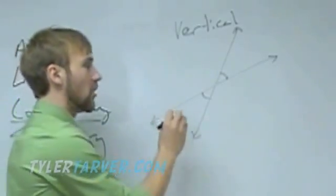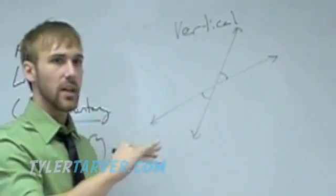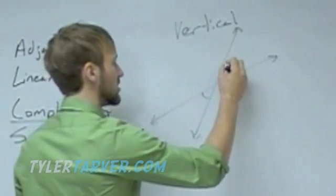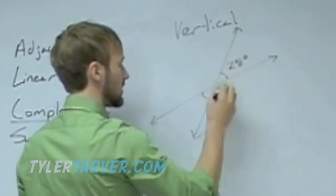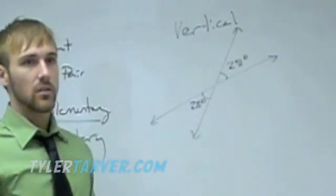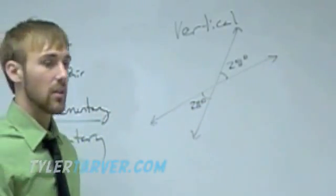All you've got to remember is that vertical angles are opposite each other. The important thing is, vertical angles are always equal, they're always equal. So if this is 28 degrees, this one has to be 28 degrees. Every time.